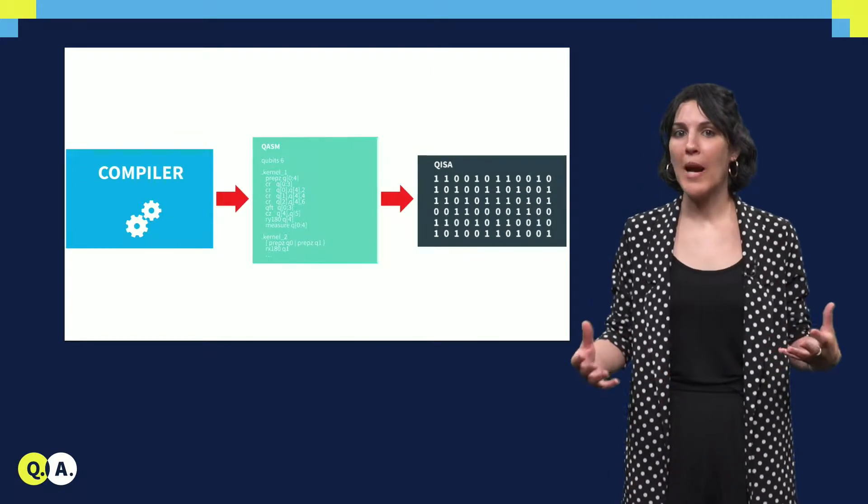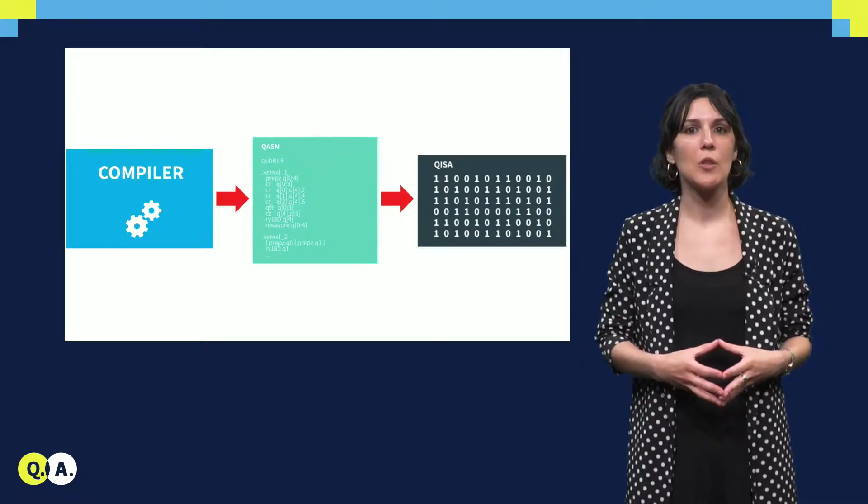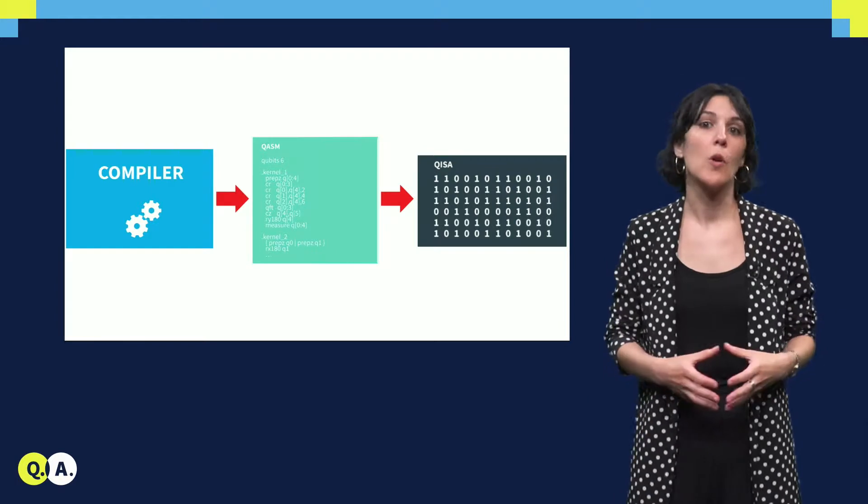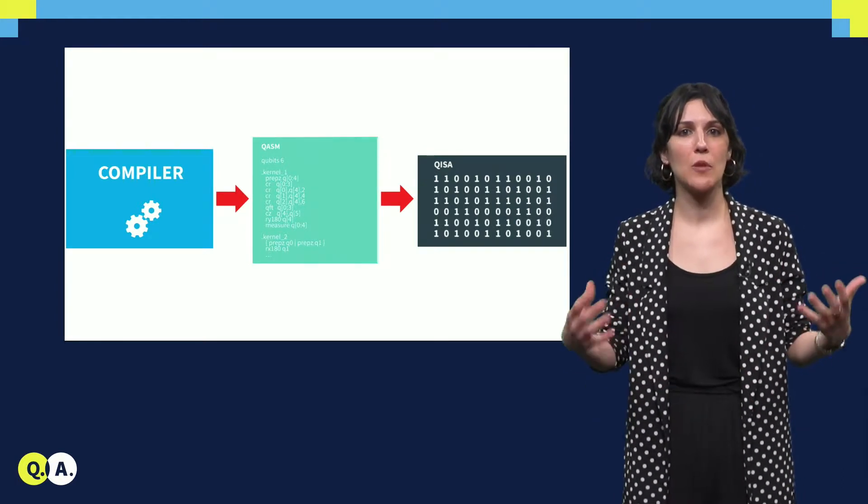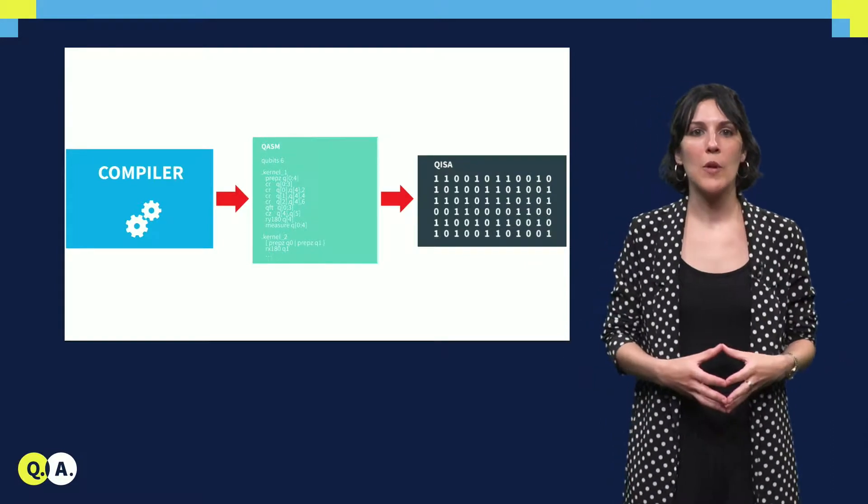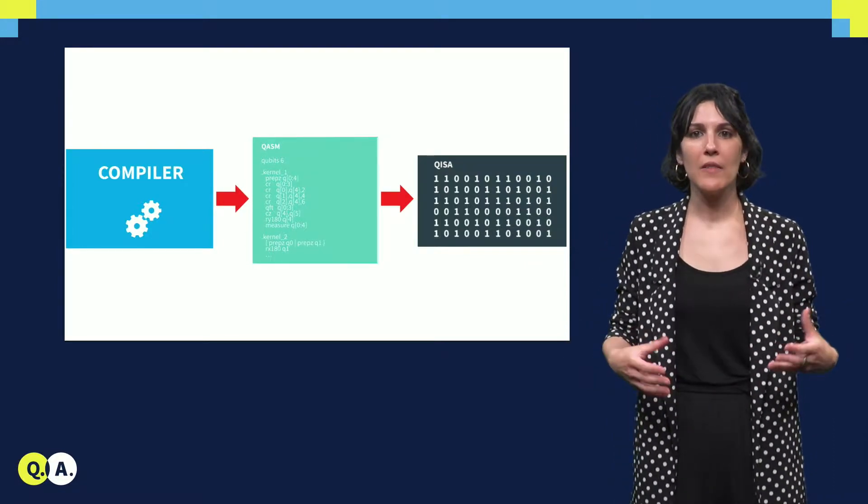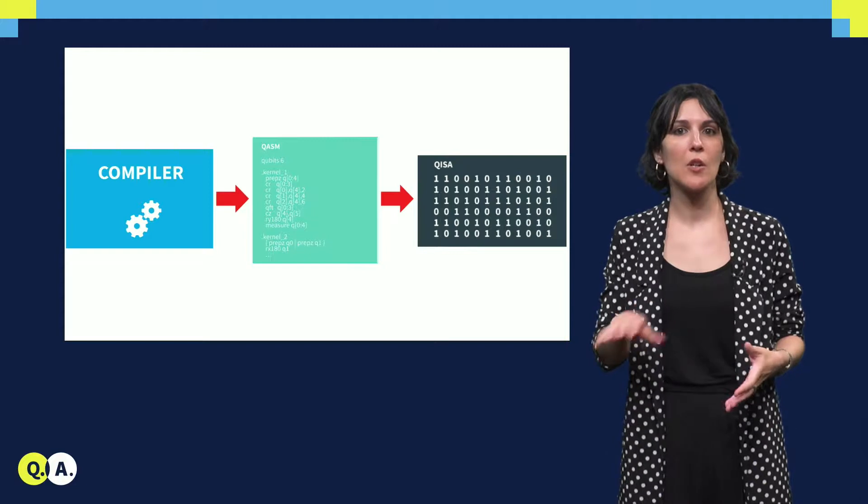Usually, a quantum compiler generates what is called quantum assembly language or Quasm that is ultimately converted into a binary executable code.